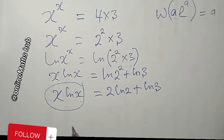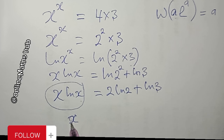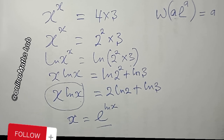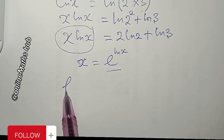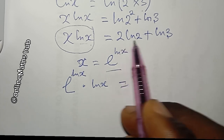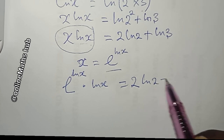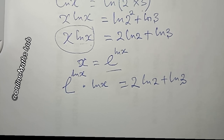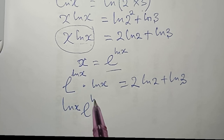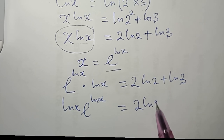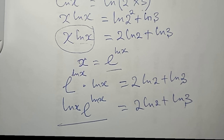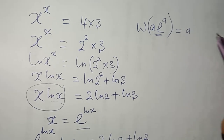We can express x as e to the natural log of x, so I replace x on the left side. This gives: e^(ln x) times natural log of x, which equals 2·ln(2) + ln(3). Rearranging, I have: ln(x) · e^(ln x) = ln(2) + ln(3) — wait, keeping the full right side: 2·ln(2) + ln(3). Now it matches the required a·e^a form.